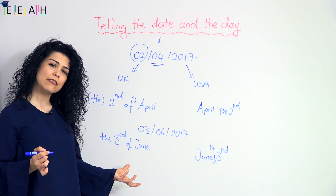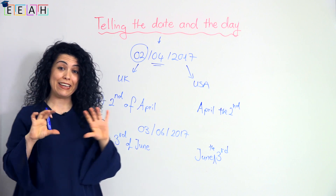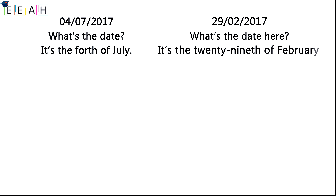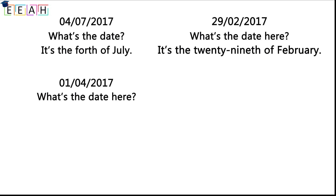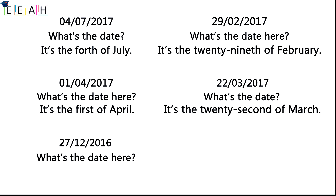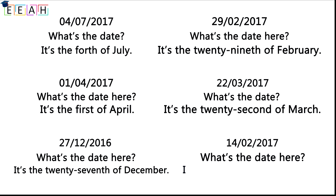Are you ready to practice? Look at the dates on the screen and read them the British and American way. What's the date? It's the fourth of July. What's the date? It's the twenty-ninth of February. It's the first of April — Fool's Day, be careful! The twenty-second of March, the twenty-seventh of December, and the fourteenth of February — Valentine's Day!